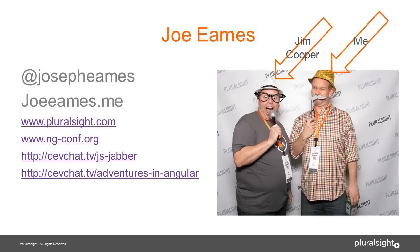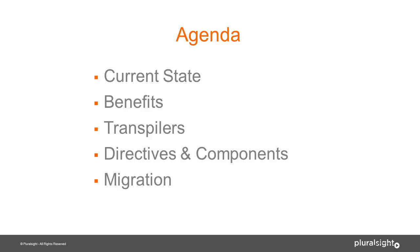Let's move on to our agenda for this webinar today. We are going to start by talking about the current state of Angular 2 — where it's at, where it's headed. After that, we'll talk about the benefits of Angular 2 versus Angular 1. We're going to look at transpilers because they play an important piece in Angular 2. Then we'll talk about directives and components from both Angular 1 and Angular 2. And the last thing we'll do is talk about migrating from Angular 1 to Angular 2.